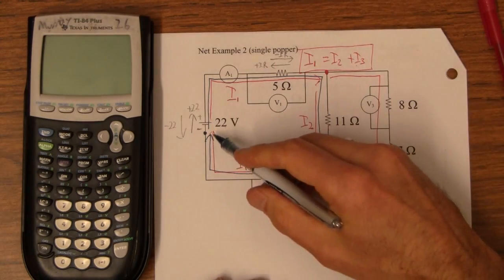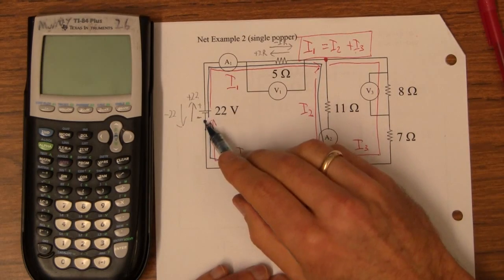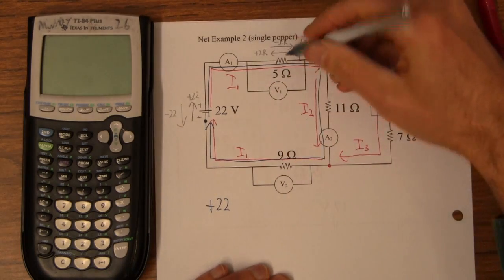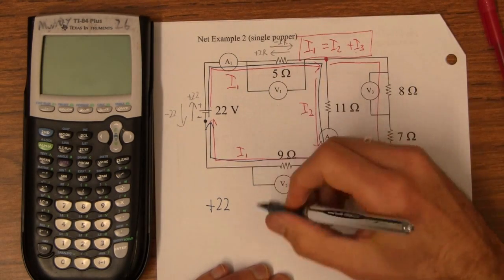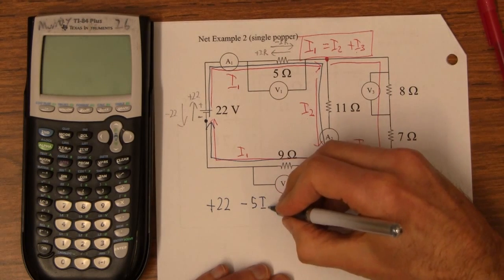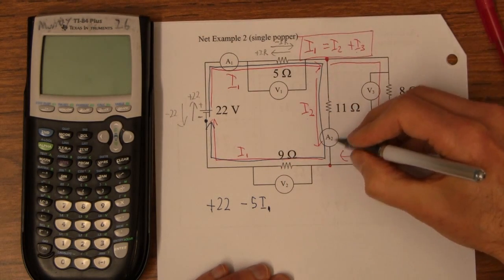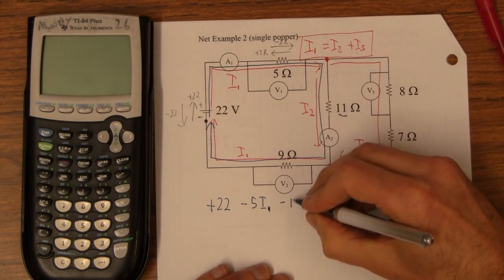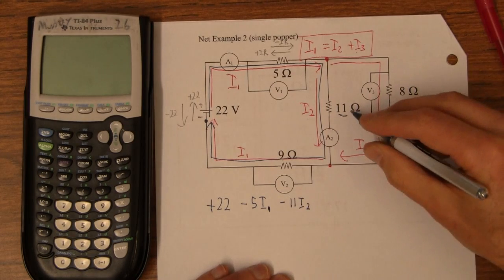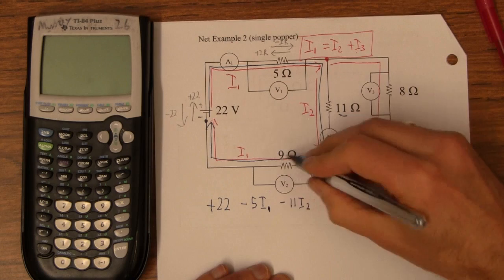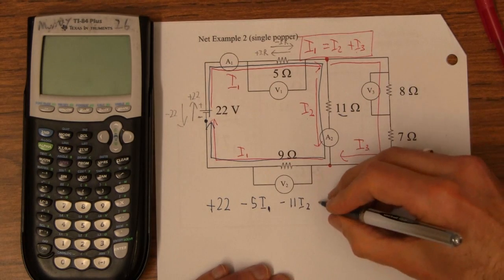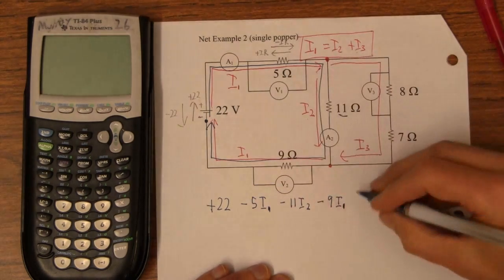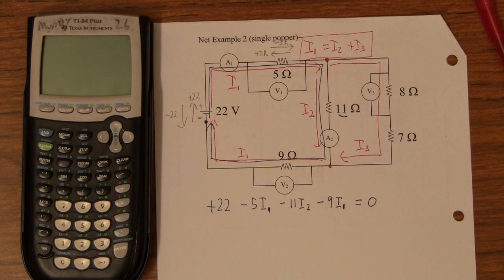So, for this guy, for this loop that I just made, I get the equation starting here, plus 22. And then I'm going downstream, and it's 5, and this current here is I1. So, I go down 5I1. And then we take this path here, and I'm going to go down 11I2. And now I'm back here, and I'm going down 9I1. I'm going through this guy. This is I1 over here. And now I'm back to where I started. So, now that equals 0.